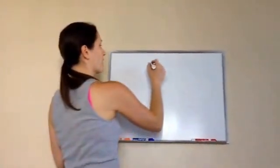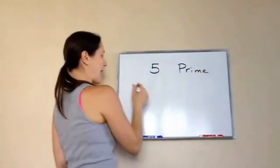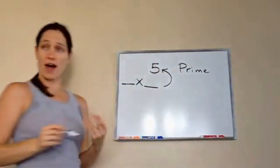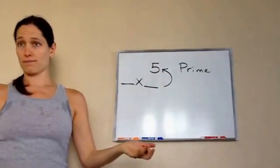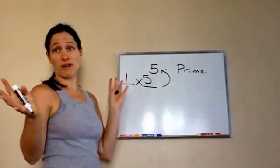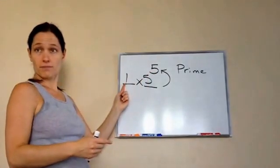For example, 5 is a prime number because if I ask myself what times what equals 5, what would you tell me? 1 times 5. So it only has two factors and that's it. You'll never have anything else. The same number and 1.